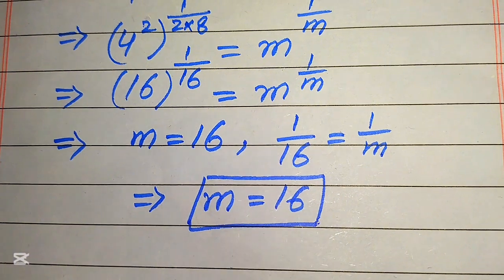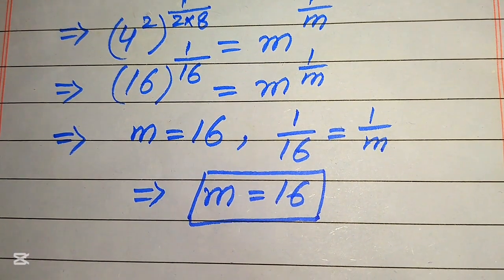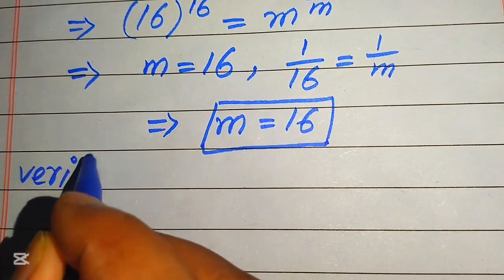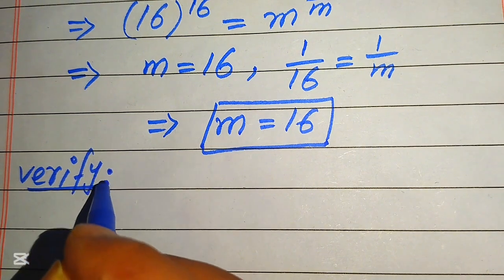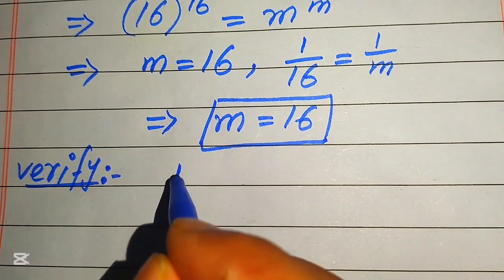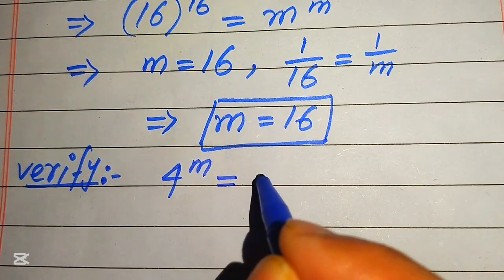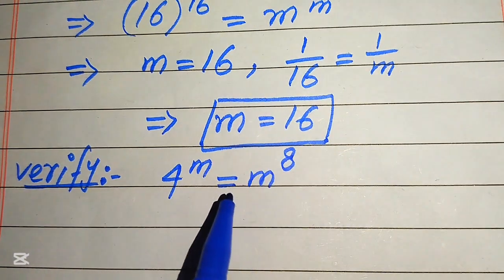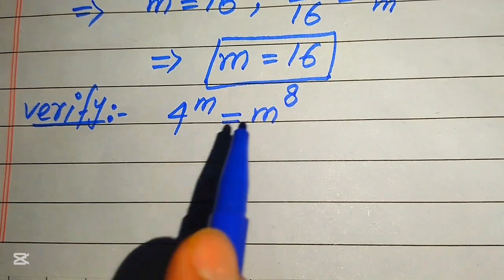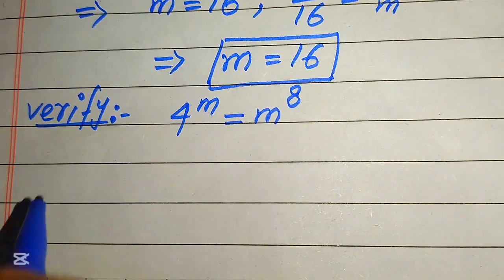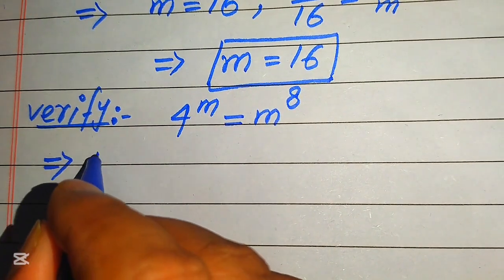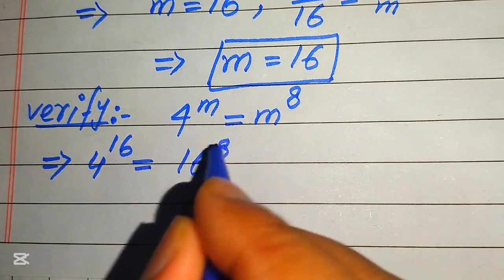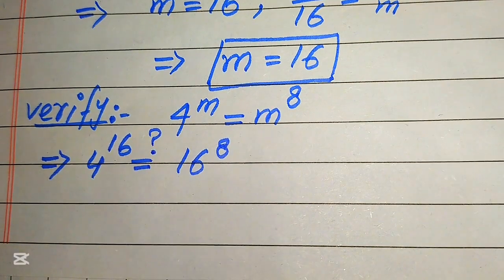This is our final value of m. Now we need to verify this value. We copy down the given equation: 4 to the power of m equals m to the power of 8. We substitute m equals 16 on both sides, giving us 4 to the power of 16 equals 16 to the power of 8.